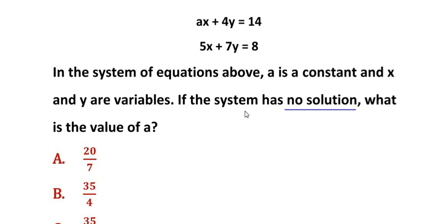If the system has no solutions, that means these two equations represent parallel lines. Both lines are parallel to each other and they are not going to meet at any point. If they were going to meet at a point, there would be a solution at their meeting point. Since the system has no solution, they are never going to touch each other.